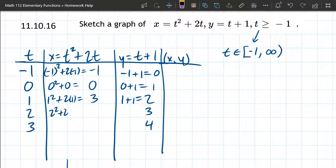2 squared plus 2 times 2, so that's 4 plus 4 is 8. And we have 3 squared plus 2 times 3, that's 9, plus 6 is 15.